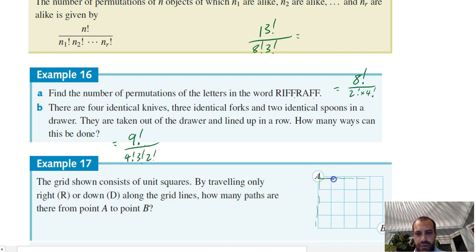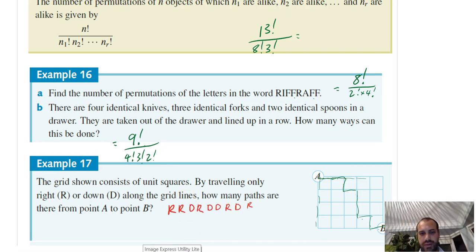Now, you could go, say, right, right, down, right, down, down, right, down, right. Let's see how many steps I just took. One, two, three, four, five, six, seven, eight, nine. I might just write that down like as a word. R, R, R, R, D, R. Oops. Alright, I got there in the end, R, R, R, D, R, D, R, D, R.